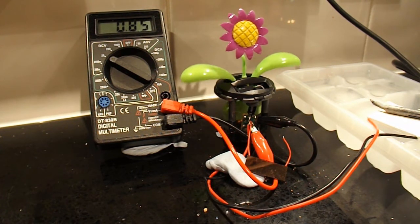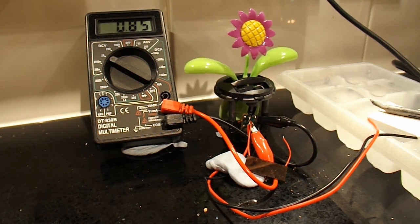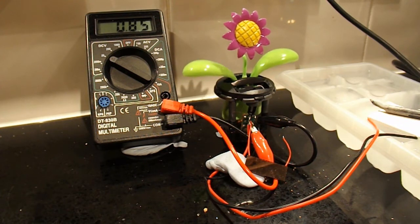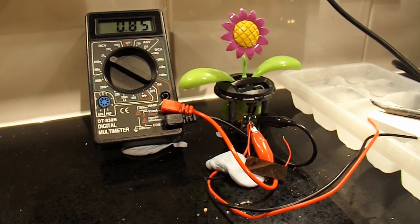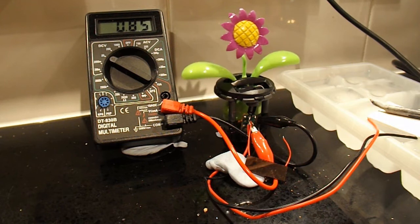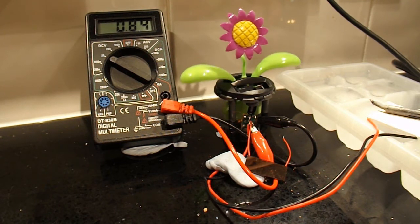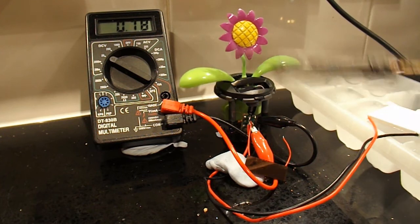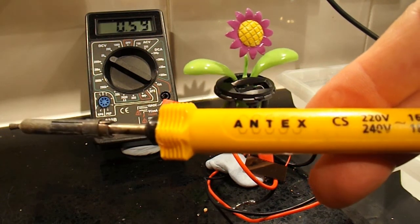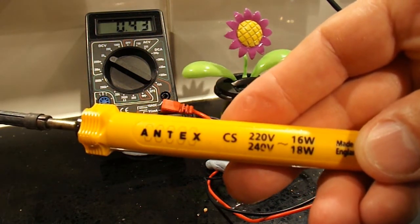OK, so we won't go into the failed projects, we'll go into the successful. So I'm generating 0.85V now with my 16W soldering iron.